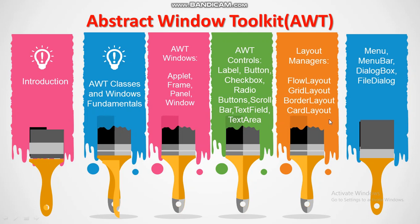How Java arranges the components on the window we will see in this point. Some inbuilt layout managers in Java are flow layout, grid layout, border layout, and card layout. Lastly, the unit content covers how we can create menus, menu bars, dialogs, and file dialogs. In this tutorial we will only see the first two points: the introduction to graphical user interface programming, and which classes are in the AWT package and the window class hierarchy.